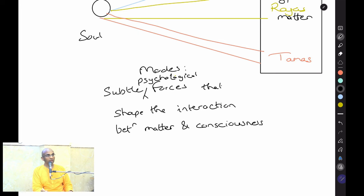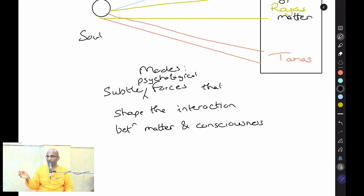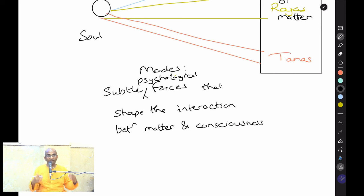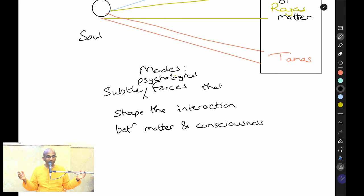Our consciousness can go towards various aspects of matter, but which aspect depends on the mode. If you are in Sattva Guna, you may be very interested in this subject: 'This is something I always wanted to understand.' If in Rajo Guna, you might think: 'I wonder what's for the meal this evening, I hope it's tasty.' If in Tamo Guna: 'It's been a long day, how long will this class go? I just want to sleep.'